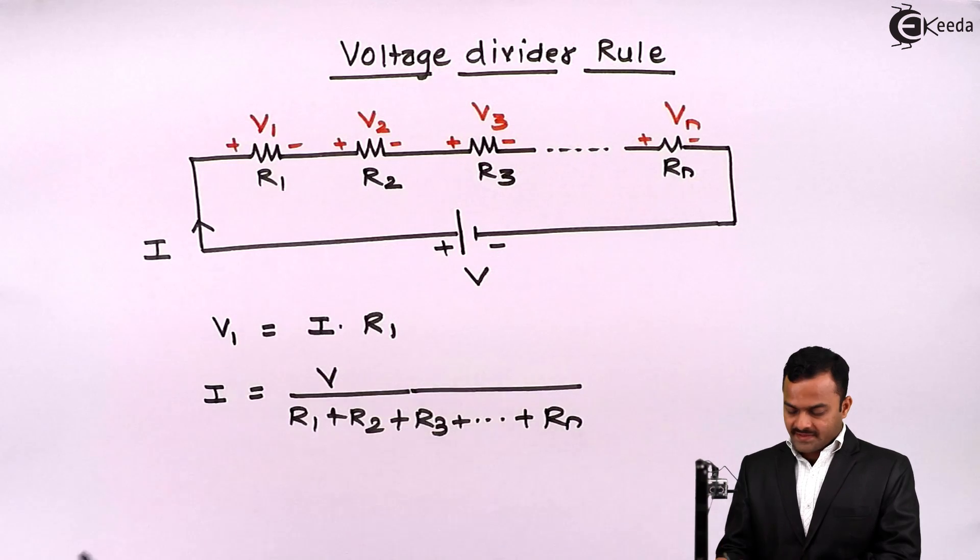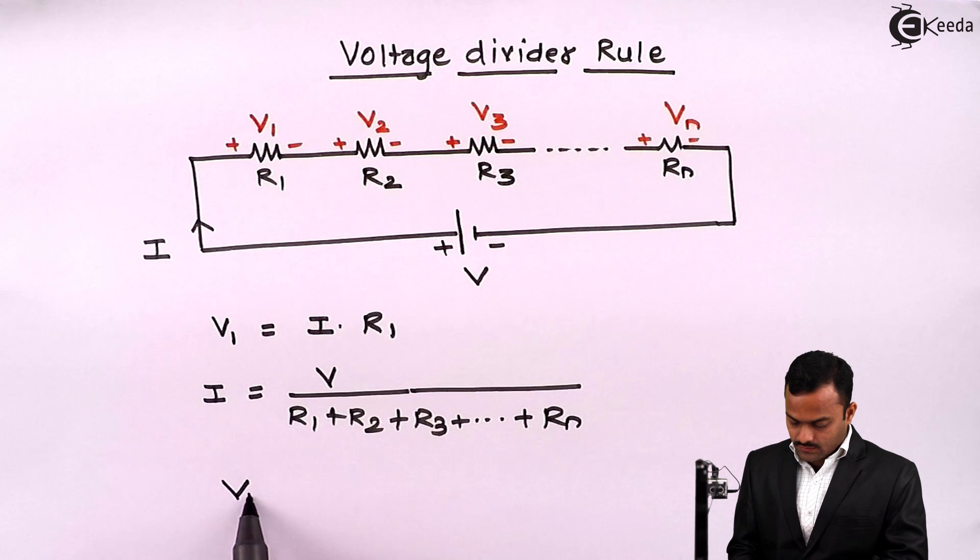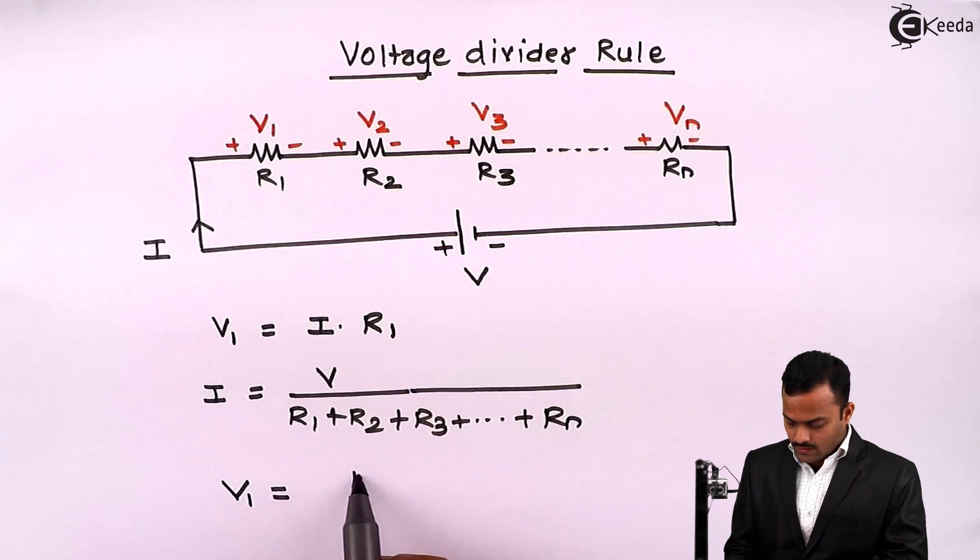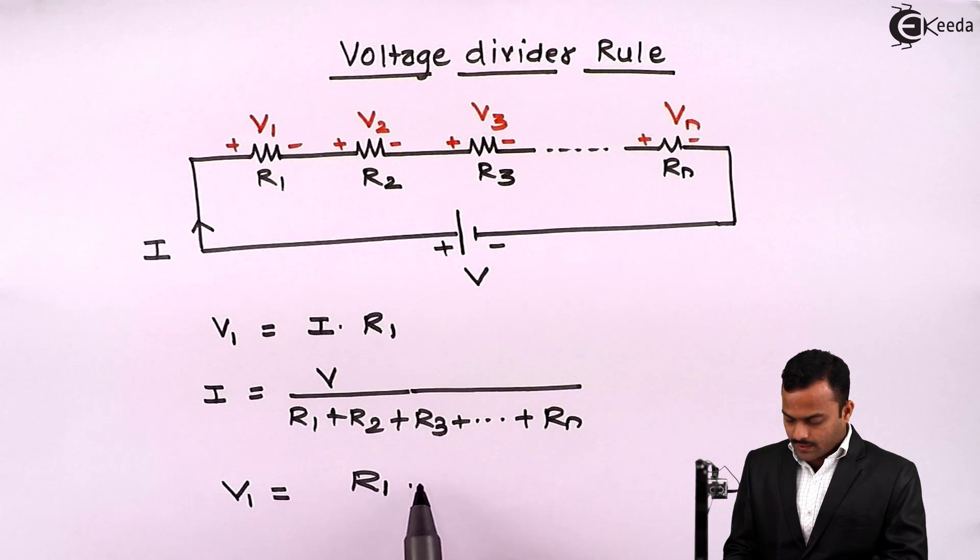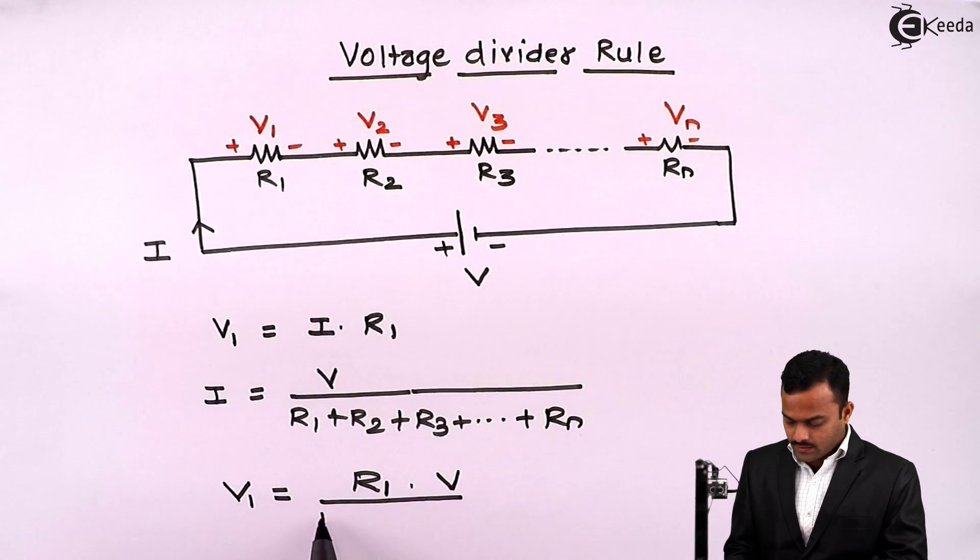So if I substitute this over here, what I will get is voltage across R1 equal to R1 multiplied by total voltage V divided by summation of all the resistances connected in series.